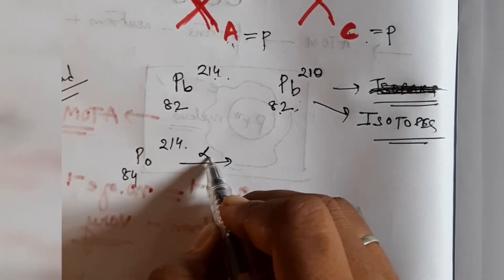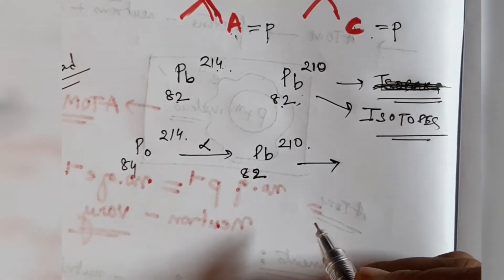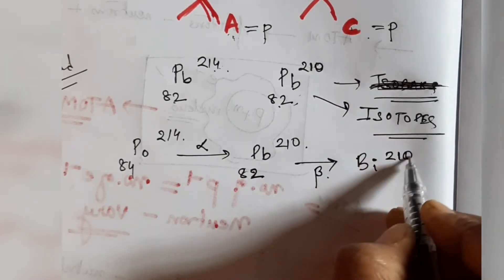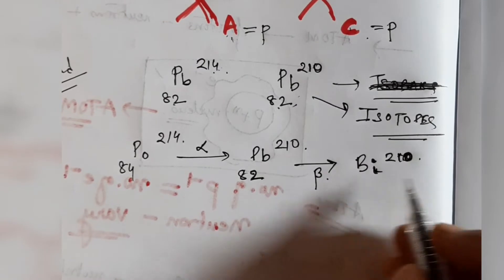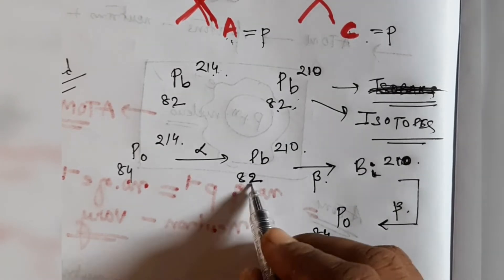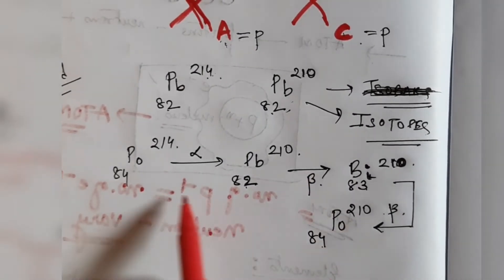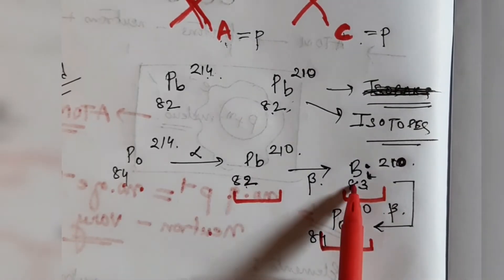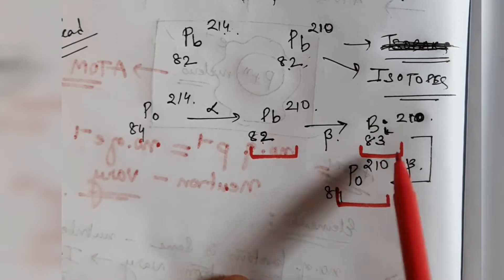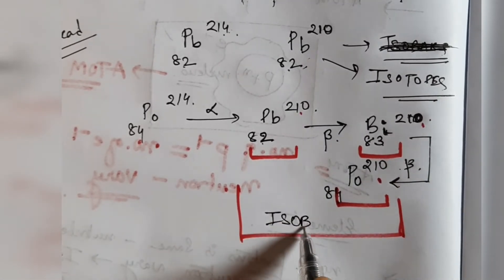Now for isobars, take polonium-214 (²¹⁴₈₄Po). When it loses an alpha particle it becomes lead-210 (²¹⁰₈₂Pb). When lead-210 loses a beta particle it becomes bismuth-210 (²¹⁰₈₃Bi). When bismuth-210 loses a beta particle it becomes polonium-210 (²¹⁰₈₄Po). Here the atomic numbers are 82, 83, and 84 — all different — but the mass number is 210 in all three cases. So these three are isobars of each other.